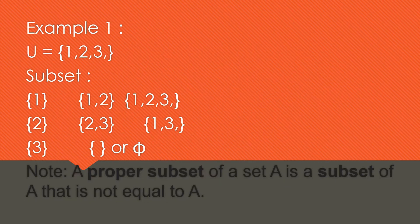Example number one: given the universal set we have {1, 2, 3}. If you are looking for the subsets, we have {1, 2, 3}, also {1, 2}, {2, 3}, {1, 3}. We also have the null set symbol — a circle with a bar line — which is called the null set.